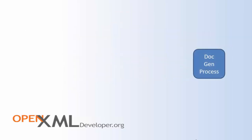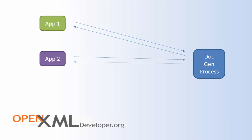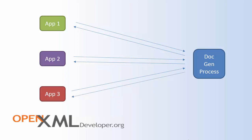How would this work? We're going to have a document generation process. Application one sends a message to the document generation process and gets its document generated. Application two also communicates to the document generation process, and application three also communicates back and forth to this document generation process. Because we have only one single process implementing OpenXML functionality, only that process will be using that instance of isolated storage, and we avoid the bug.